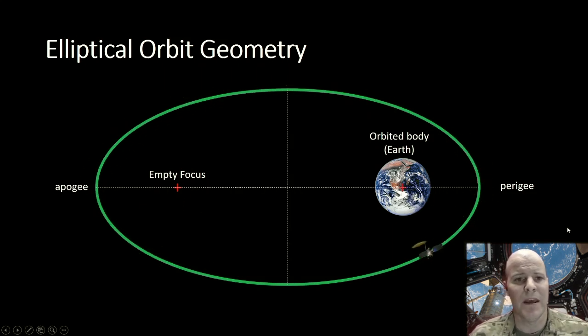I can also define some orbital terms here. Perigee is going to be the point on the orbit which is closest to the Earth, and apogee is going to be the point on the orbit that's farthest away from the Earth.